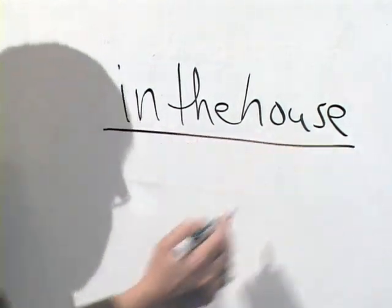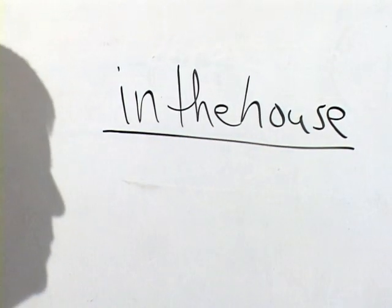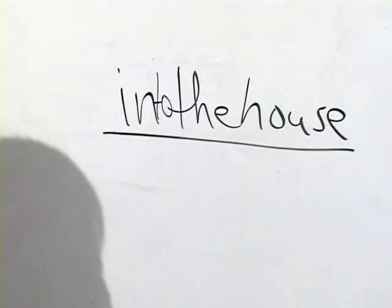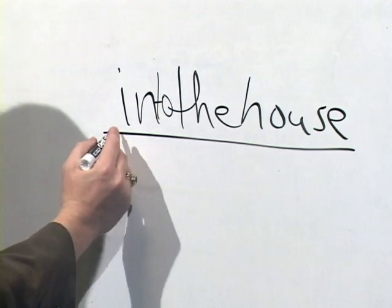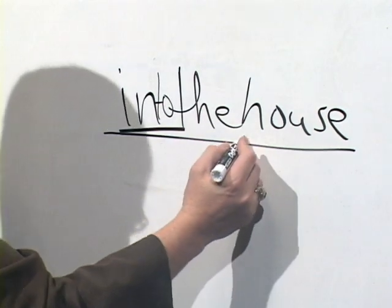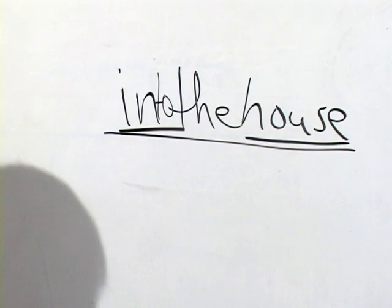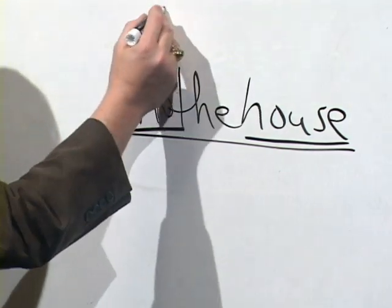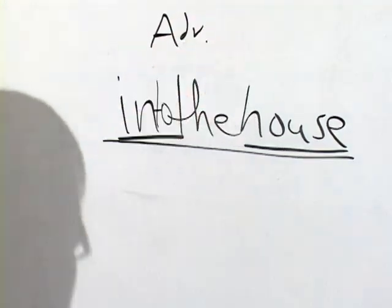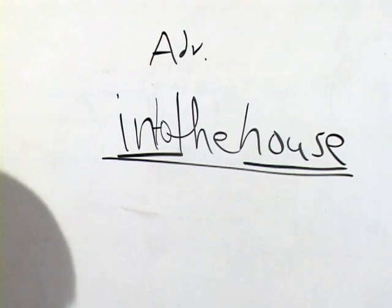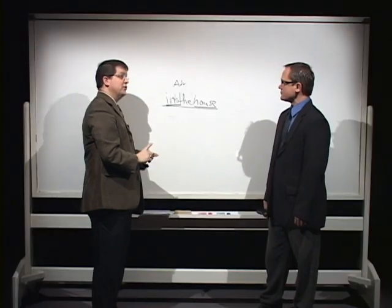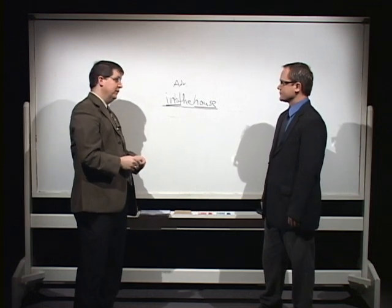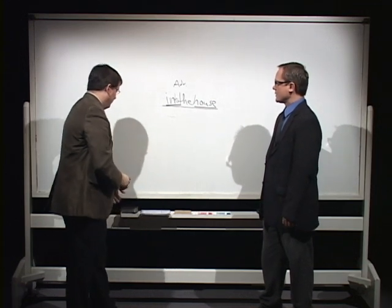What these prepositions do is they begin prepositional phrases, the whole phrase of which can serve as another part of speech. For instance, 'we went into the house' — 'into the house' is answering the question 'where?' So 'into' is a preposition, 'house' is the object of the preposition, and since it is answering the question 'where,' this is an adverb phrase. You can also have prepositional phrases which are adjective phrases and prepositional phrases which are noun phrases.